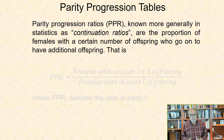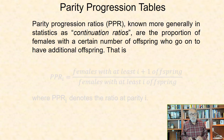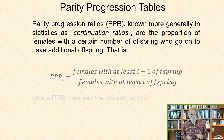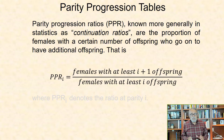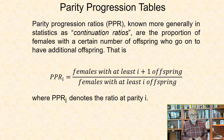Parity progression ratios, PPR, known more generally in statistics as continuation ratios, are the proportion of females with a certain number of offspring who go on to have additional offspring. So PPR subscript i equals the number of females with at least i plus 1 offspring divided by the number of females with at least i offspring, where PPR i denotes the ratio at parity i.